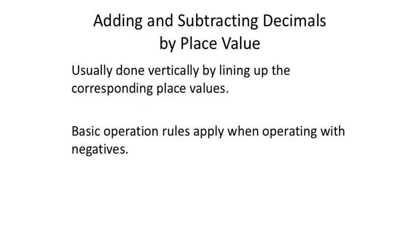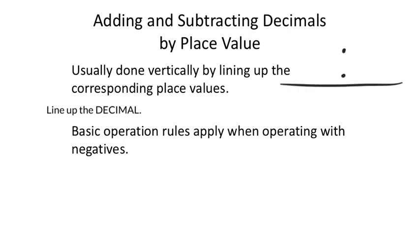Adding and subtracting decimals by place values — we usually do this vertically by lining up the corresponding place values. The main thing to look for is the decimal. Find that decimal and line them up, because then you don't have to worry about whether you're looking at the tenths, hundredths, ones, or thousands. Once the decimals are lined up, everything else lines itself up, including the decimal in your answer. This method is only for addition and subtraction — the rules for multiplying and dividing are different.